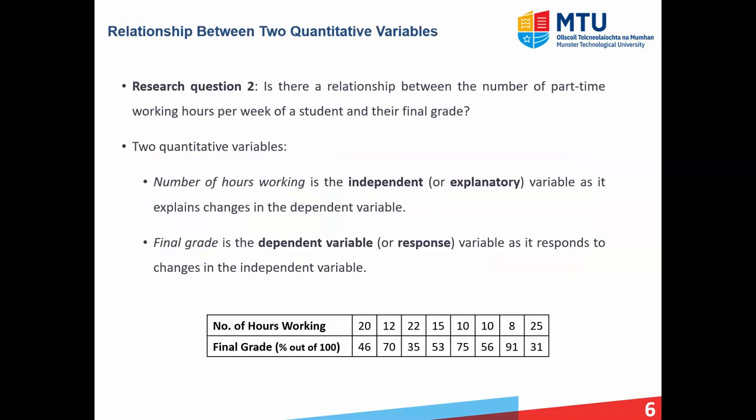Next, we will consider the relationship between two quantitative or numerical variables. The second research question is: is there a relationship between the number of part-time working hours per week of a student and their final grade? There are two quantitative variables here — the number of part-time hours per week and final grade. The number of hours is the independent or explanatory variable; it explains changes in the other variable. Final grade is the dependent or response variable — it responds to changes in the other variable. We would expect that the more hours a student spends on part-time work, their final grade should decrease. The data is represented in a small frequency table with eight data points representing eight students, where student one worked 20 hours part-time per week and ended up getting a final grade of 46%.